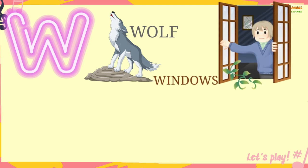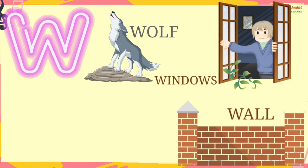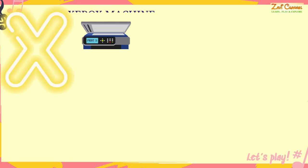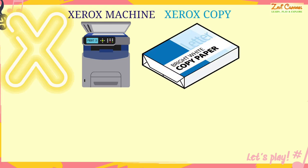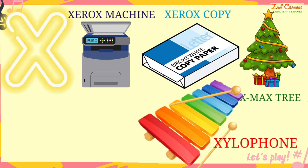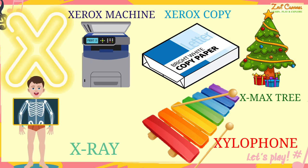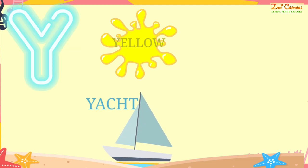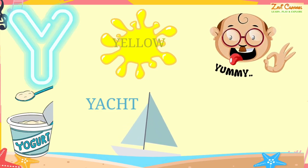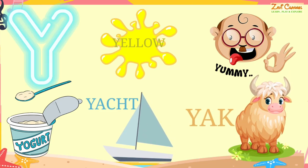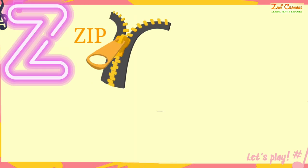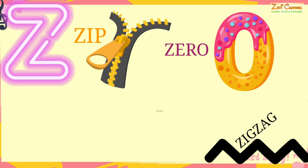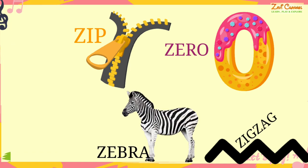W. W for Wolf, W for Window, W for Wall, W for Water, W for Well. X. X for Xerox Machine, X for Xerox Copy, X for Christmas Tree, X for Xylophone, X for X-Ray. Y. Y for Yacht, Y for Yellow, Y for Yummy, Y for Yogurt, Y for Yak. Z. Z for Zip, Z for Zebra, Z for Zoo.